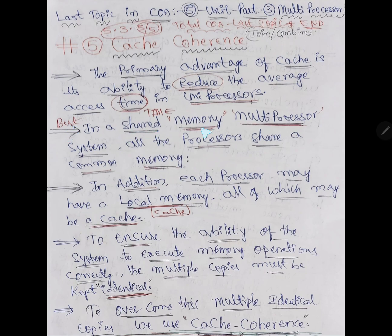But in shared memory multiprocessor systems, all processors share a common memory. In addition, each processor may have local cache memory. Each separate processor has a separate cache. To ensure the ability of the system to execute memory operations correctly, we need to access data correctly. If you don't access correctly, that is a problem which I will tell you.